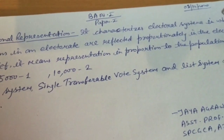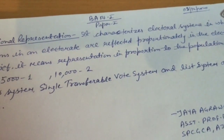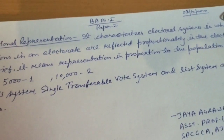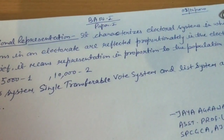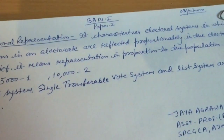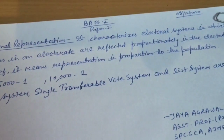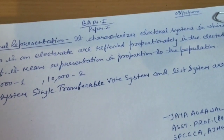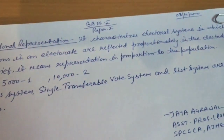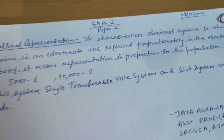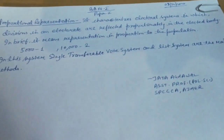The surplus votes of not only the successful candidates are transferred, but also those of candidates who have secured so few votes that they have no chance of being elected at all. Thus in this system, counting takes place many times and continues until candidates are in a position to secure their minimum quota. Candidates securing the fixed electoral quota are declared to have been elected.